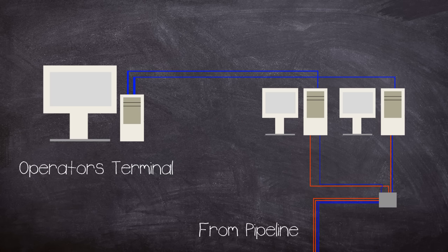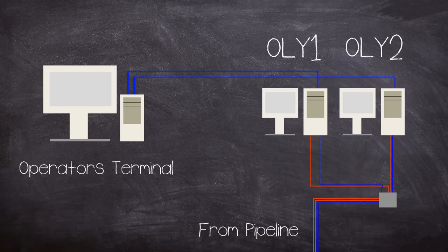Olympic's SCADA system used two identical computers which were called OLY1 and OLY2. One of the computers was used as the primary system with the other available as a backup.